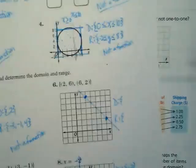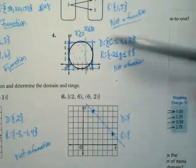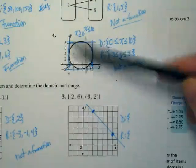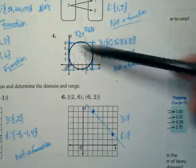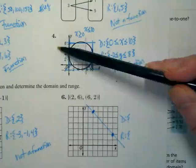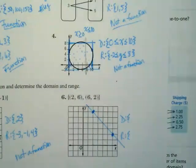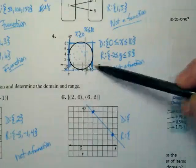We had constraints yesterday when we looked at this problem here. This was the lowest value on the domain, and this was the highest value on the domain. Are we ever going to have a negative 1 or negative 2 in the X values with this problem? There were negatives in the Y values, correct?